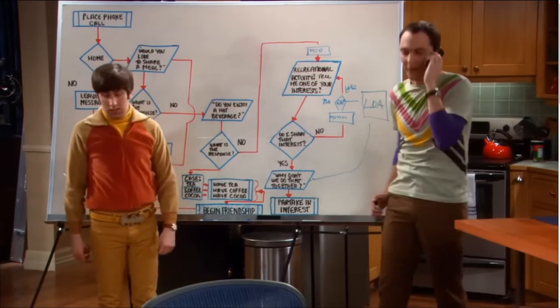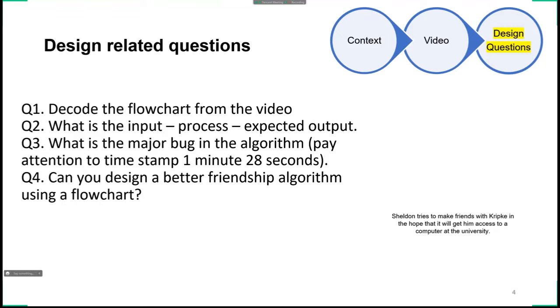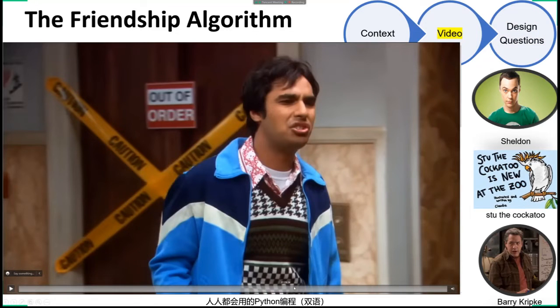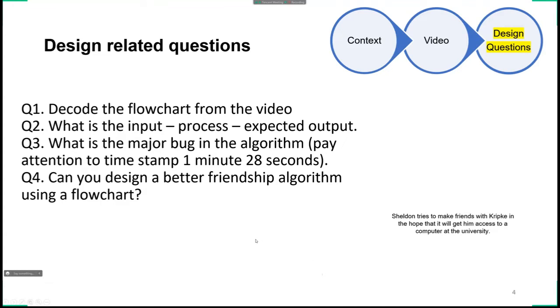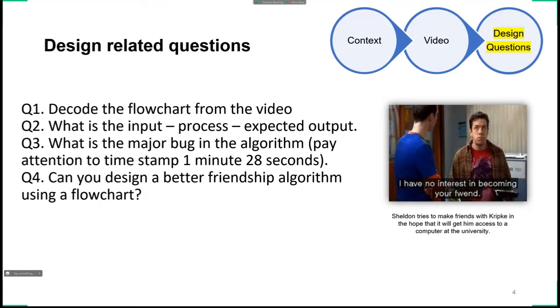Now that we have watched the video, I want you to think about four small things and answer these questions. First, can you just decode, which means take the flowchart from the video and draw the flowchart? Second, what is the input, what is the process, and what is the expected output in Sheldon's algorithm? Third, what is the major bug? You remember this keyword bug I taught you last time? In software, bug or design bug means some problem. I say pay attention to the time stamp one minute 28 seconds. The flowchart has a bug. What is the bug? Question four: can you design a better friendship algorithm using a flowchart? Four questions, no right answers, subjective. I hope you can just understand, watch the video and try to understand the role of design.